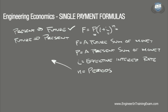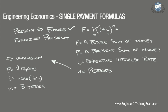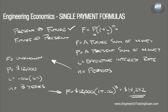In this problem, F is our unknown future value we are solving for. P is our initial value of $12,000. The interest rate is 6%, or 0.06 as a decimal. Our period is 3 years. Plugging these values into the formula, we get F equals 12,000 times (1 plus 0.06) raised to the 3rd, which equals $14,292. So the equivalent of $12,000 invested now at 6% annual interest in 3 years is $14,292.